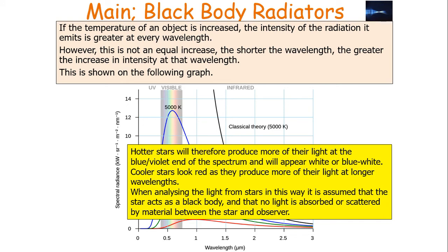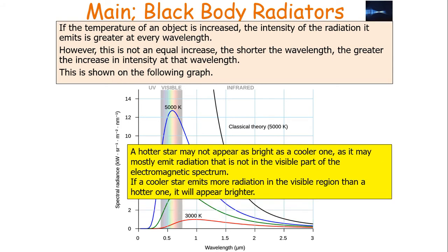Hotter stars will therefore produce more of their light at the blue or violet end of the spectrum and will appear white or blue-white to observers. Cooler stars will look red as they produce more of their light at longer wavelengths. When analysing the light from stars this way, it is assumed that the star is acting as a black body, so no light is absorbed or scattered by material between the star and the observer. It's also important to note that a hotter star may not appear as bright as a cooler one, as it may mostly emit radiation not in the visible part of the electromagnetic spectrum. If a cooler star emits more radiation in the visible spectrum than a hotter one, it will appear brighter to optical telescopes — which is why it's important to observe stars in both optical and non-optical telescopes.